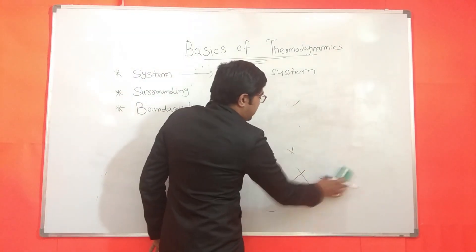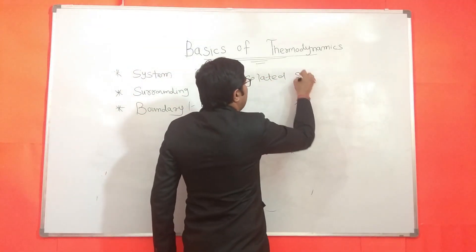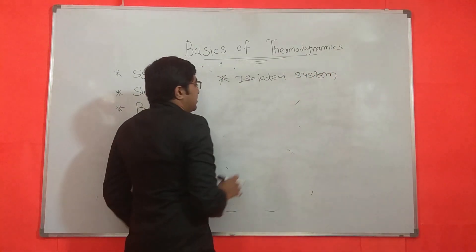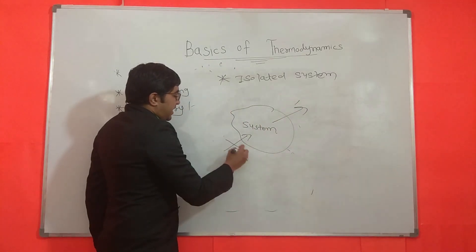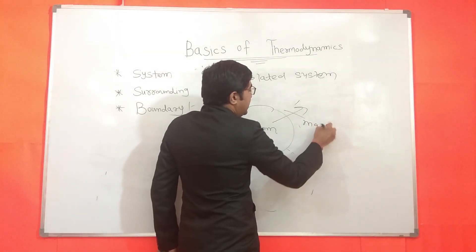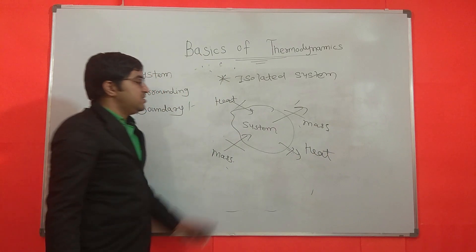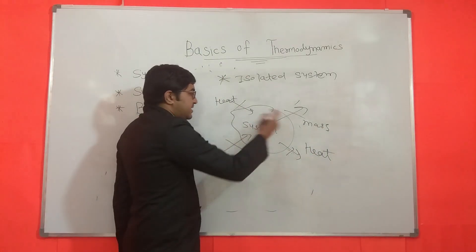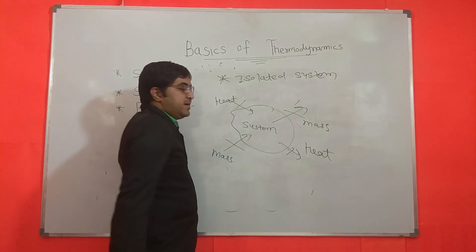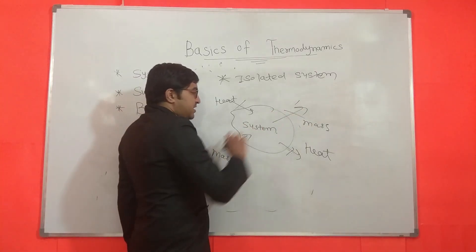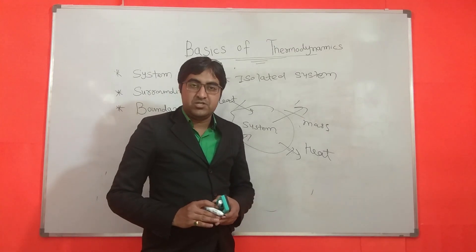The third type is the isolated system. In an isolated system, there is no transfer of mass and also no transfer of heat. Mass does not cross the boundary and heat does not cross the boundary. So an isolated system is one in which neither mass nor heat crosses the boundary.